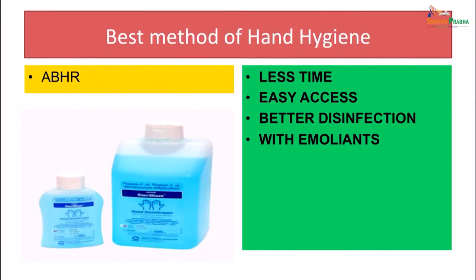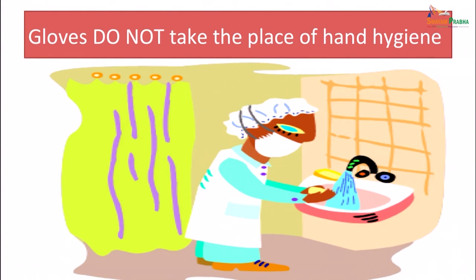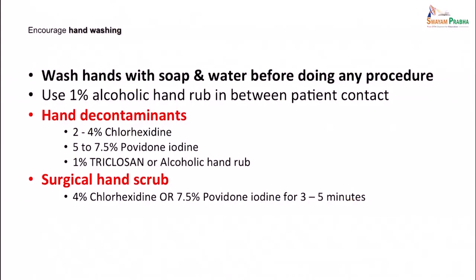The best method of hand hygiene is using the alcoholic rub, which needs less time, has easy access, provides better disinfection, and contains emollients. As far as efficacy of hand hygiene: good hand hygiene can be done with plain soap; better with an antimicrobial soap; best with alcohol-based hand rub. Gloves do not take the place of hand hygiene — hand hygiene must be done and is an addition to gloves, not a replacement. Wash hands with soap and water before doing any procedure; using 1% alcoholic hand rub in between patient contacts is important. For hand decontaminants you could also use 2 to 4% chlorhexidine, 5 to 7% povidone-iodine, 1% triclosan, or alcoholic hand rub. Surgical hand scrub is usually 4% chlorhexidine or povidone-iodine for 3 to 5 minutes.